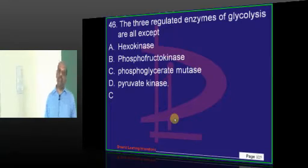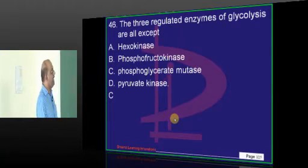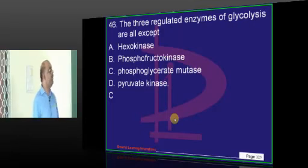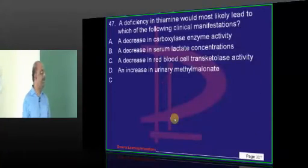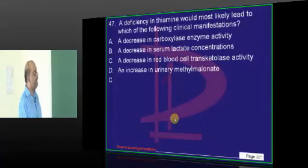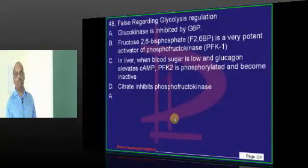Hexokinase, pyruvate kinase, phosphofructokinase - they are all considered to be the common enzymes which are involved in the regulation of glycolysis. Thiamine deficiency affects the transketolase levels, as all of you know very well.